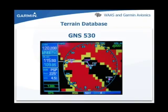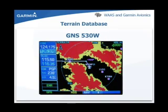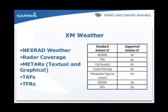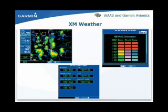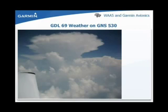Terrain is shown at higher resolution on a WAAS GNS unit compared to a Classic GNS unit, and terrain is now a standard feature on all WAAS GNS units. If the GDL-69 or 69A is installed with the WAAS GNS unit, both textual and graphic data link weather provided by XM WeatherWorks can be displayed. The WAAS unit will display high resolution NEXRAD radar, precipitation type at the surface, temporary flight restrictions, textual and graphic METARs, and terminal aerodrome forecasts. NEXRAD radar is displayed for the entire continental United States. To view NEXRAD information in a distant location, activate the map cursor and move it to the location of interest.